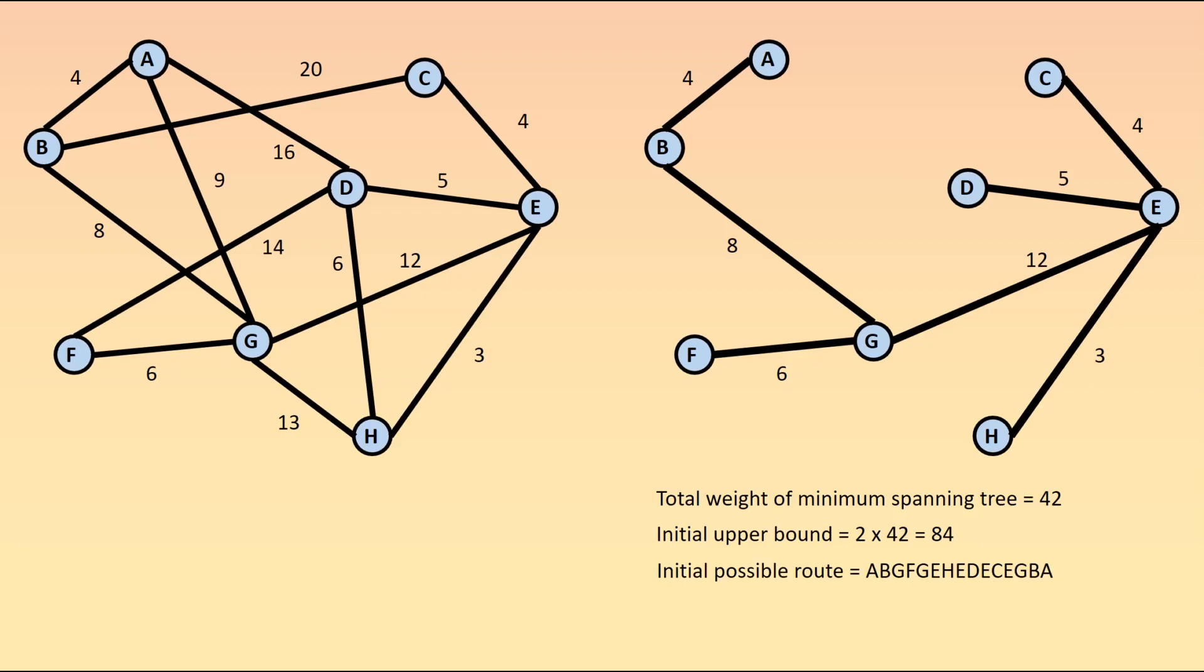Here is an example of the route, and I'll show how that one works. I'll use red to show that I've travelled along an arc, and blue if I travel along it a second time. So we start at A, we go to B, then we go to G, then to F, then back to G, then up to E, down to H, back up to E, to D, back to E, to C, back to E. And we need to get back to our starting point, so we go to G, then to B, then to A.